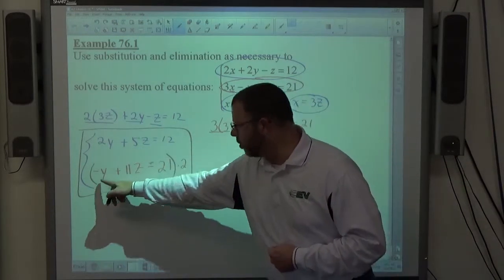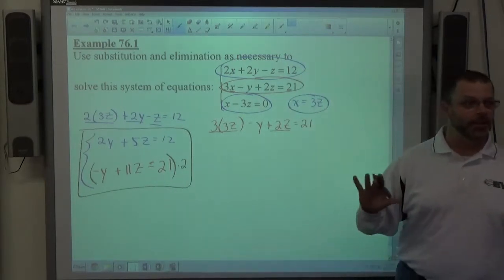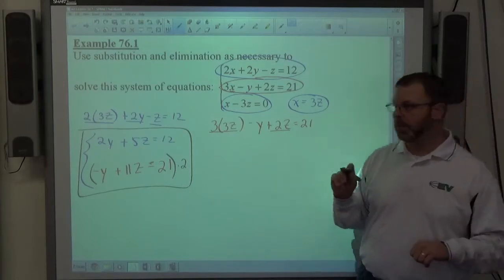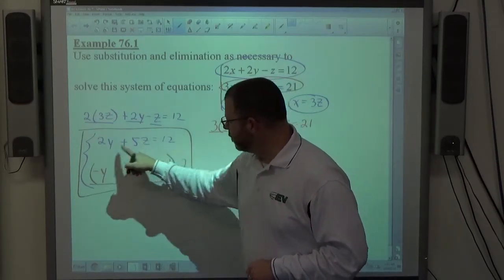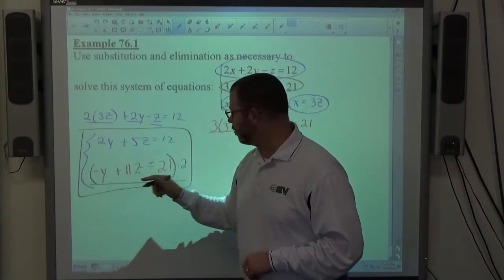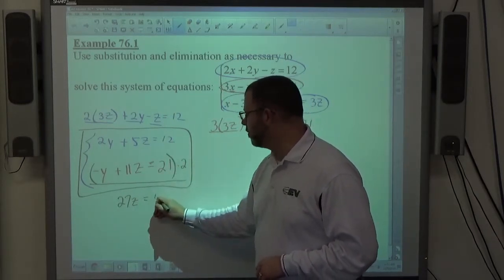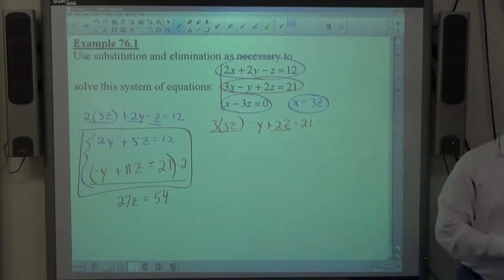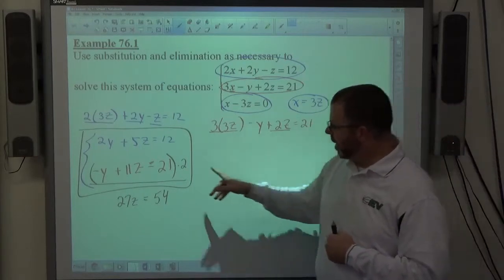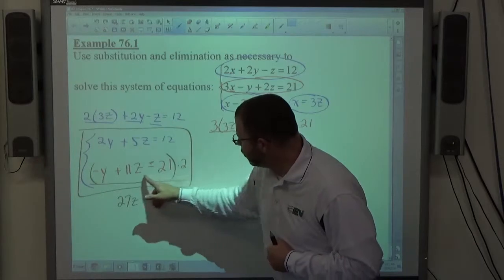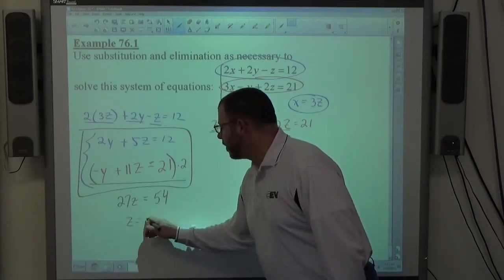Now, I could actually write negative 2Y plus 22Z equals 42, right? All right, but again, I'm basing this on my belief in you guys as far as doing this. Here's a corner you can cut on these problems. If you go ahead and multiply and then add, negative 2Y plus 2Y is 0Y, right? It cancels. 22Z plus 5Z is 27Z equals 42 plus 12 is 54. I believe you guys can handle that. But again, negative 2Y plus 2Y cancels. 22Z plus 5Z is 27Z. 42 plus 12 is 54. Divide both sides by 27. We get Z is equal to 2.